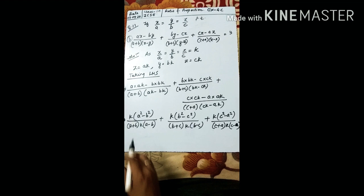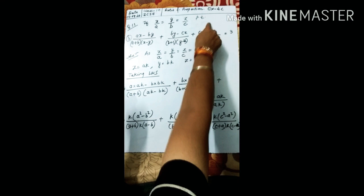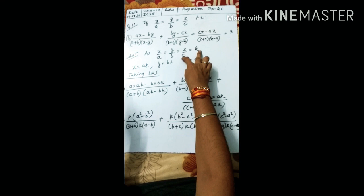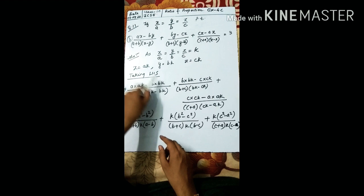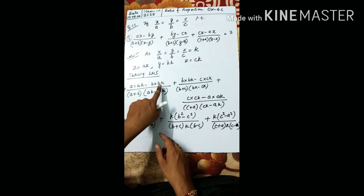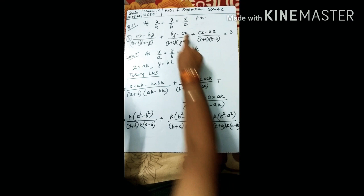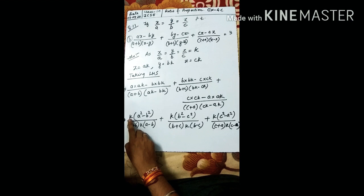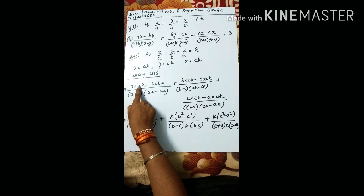Let us come to the 11th question. Given: x/a = y/b = z/c. We need to prove a certain quantity equals 3. Let this ratio equal k. Then x = ak, y = bk, z = ck. Substituting all values into LHS: in the numerator ax, x = ak gives a·ak = a²k; similarly ay = b²k; in the denominator (x - y) terms become ak - bk.